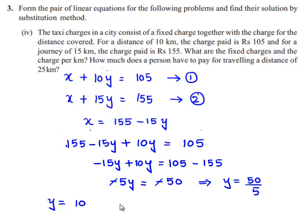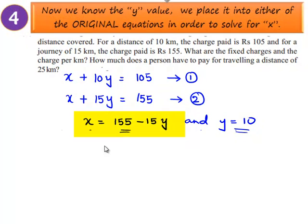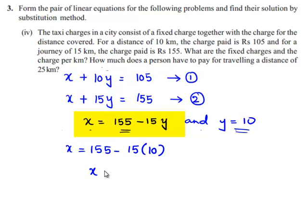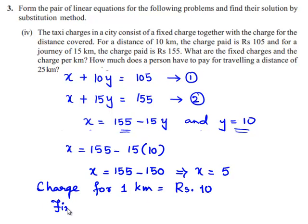Therefore, the charge for 1 kilometer is rupees 10. Now substituting the value y equals 10 into the equation, we get x is equal to 155 minus 15 times 10, which is 150. Therefore x is equal to 155 minus 150, which is 5. So the charge for 1 kilometer is rupees 10 and the fixed charge is equal to rupees 5.